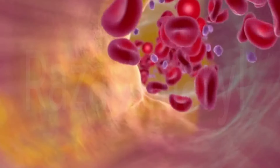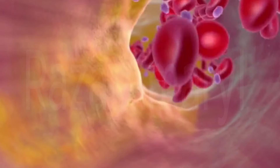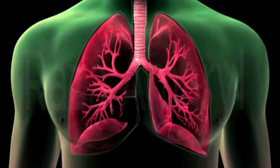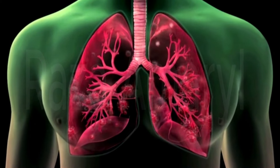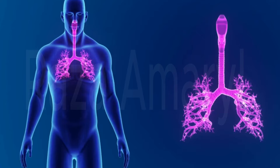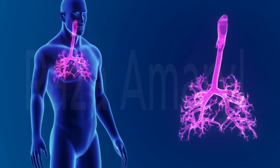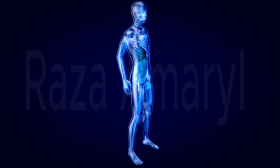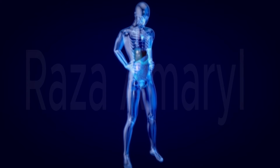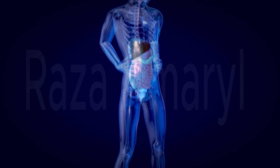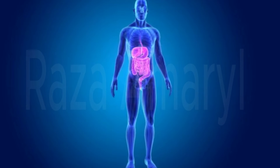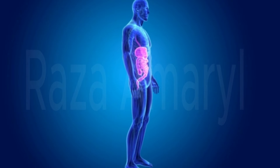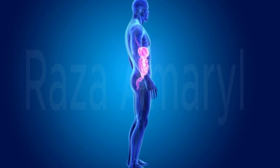Body Systems: The human body is made up of various interconnected systems, including the skeletal, muscular, circulatory, respiratory, digestive, nervous, and reproductive systems. Each system has its own unique functions and structures.